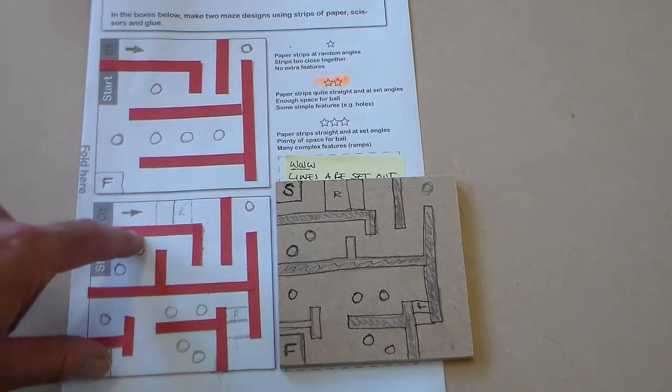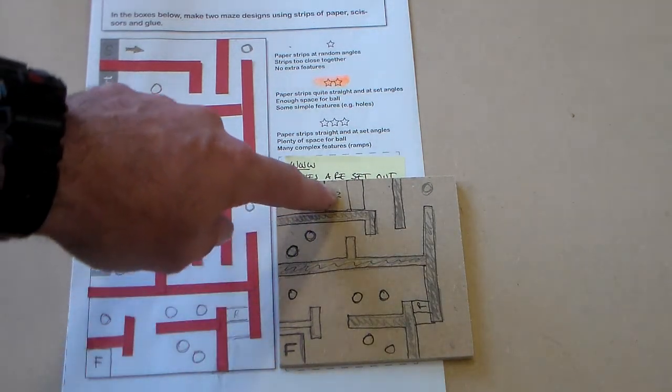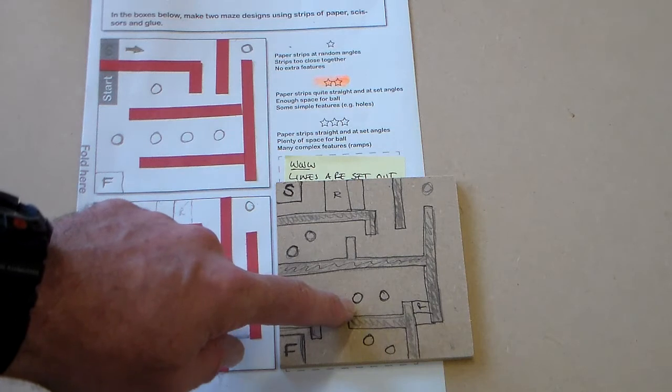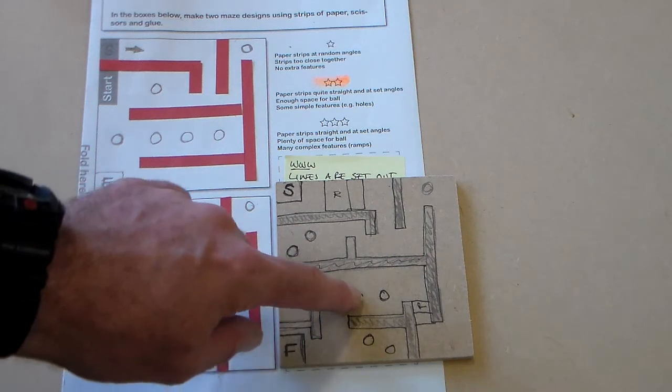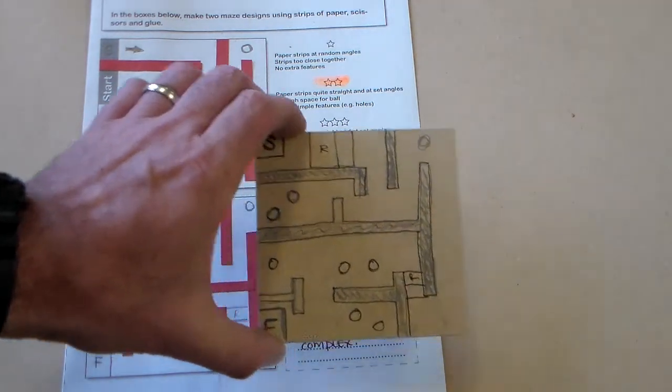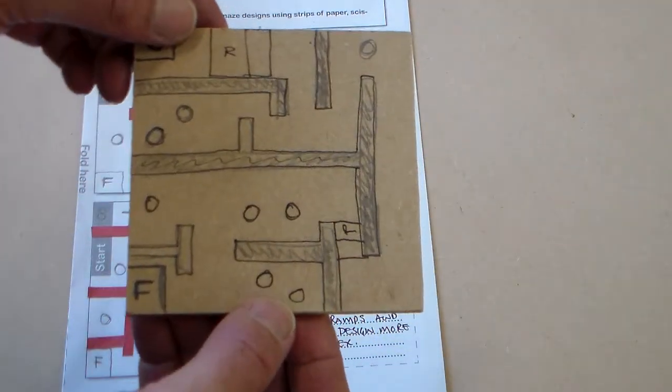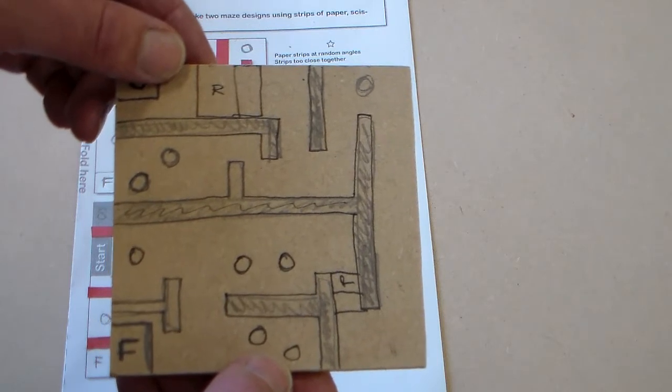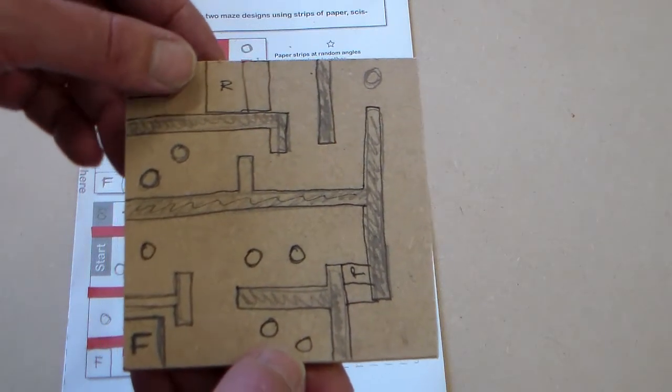So it's just carefully following, drawing it rectangle by rectangle, adding the features, adding the balls where we think they might fall down and a start and finish. So we've added all these features onto our piece of MDF and now we're ready to start cutting.